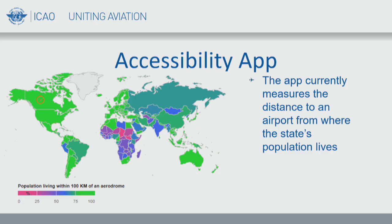Our iSTARS application measures the percentage of individuals living within 100 kilometers of an international aerodrome. If there isn't an international aerodrome, we also measure the percentage of the population living within a regional aerodrome that has at least one connection to an international aerodrome. Looking at the map, Canada, the United States, Europe, and Australia have very high percentages of their population living close to an aerodrome. But Africa and parts of the Middle East have lower accessibility in terms of distance, with fewer people living close to aerodromes.